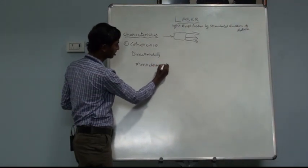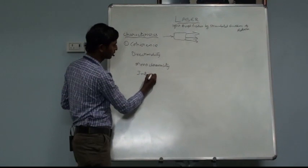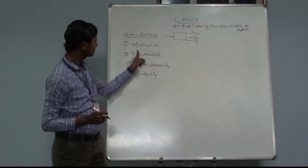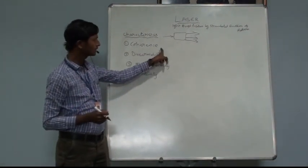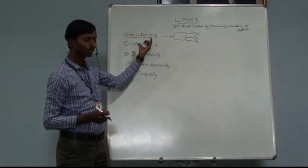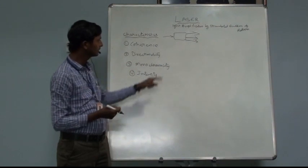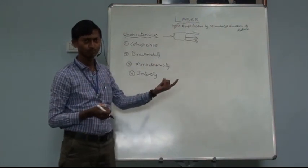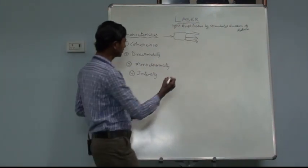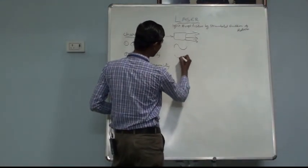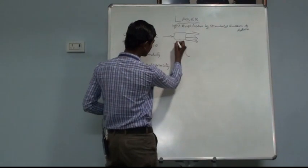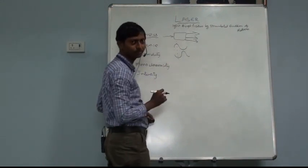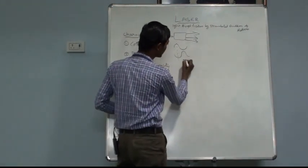These are the four important characteristic properties of laser light. Now let us discuss the first: coherence. In an ordinary source of light, such as a torch or tube light, if you observe the wave pattern, the waves are completely out of phase with each other. At a given instant of time, the first wave has a maximum peak while another wave has a minimum peak.